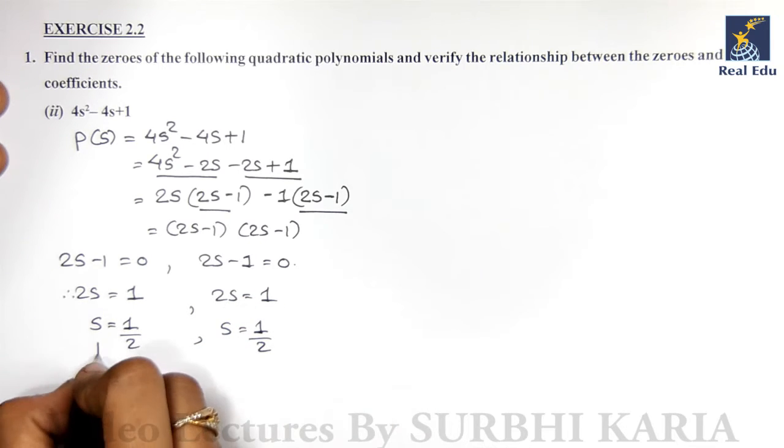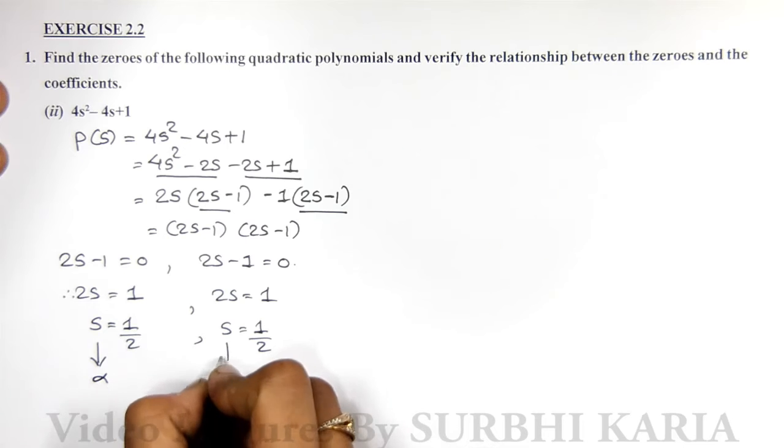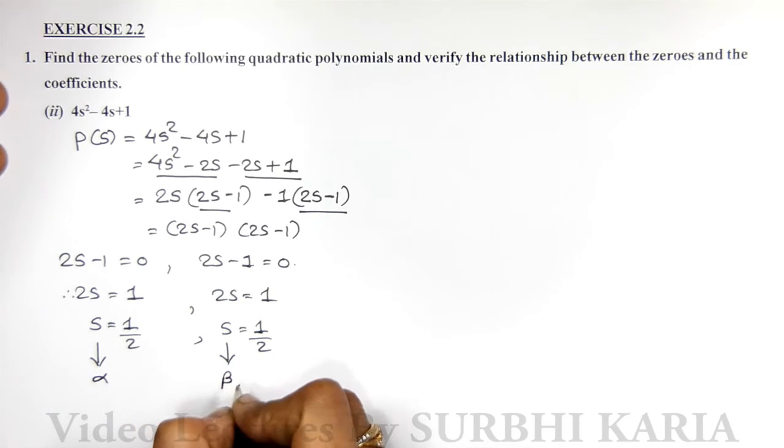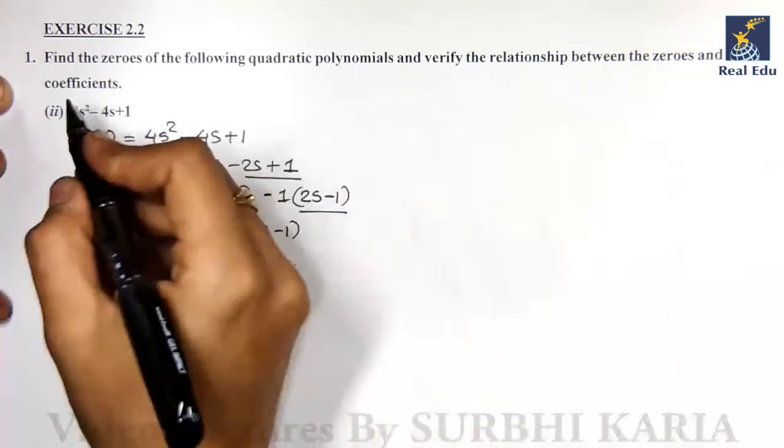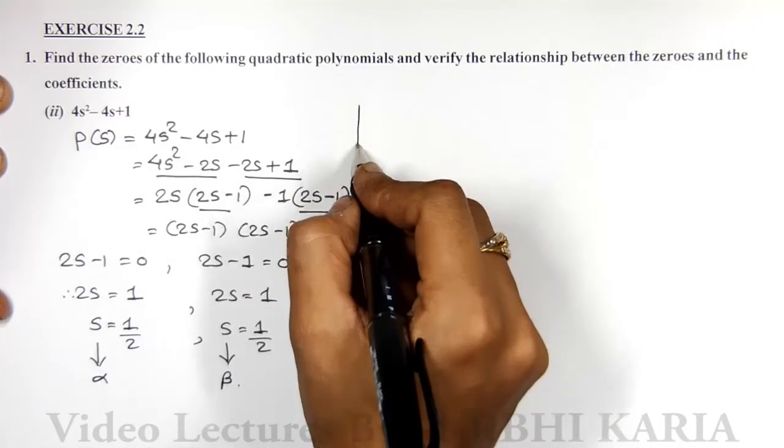I got my two zeros: one is α, one is β. Like the previous sum, we will show the relationship between the zeros and coefficients.